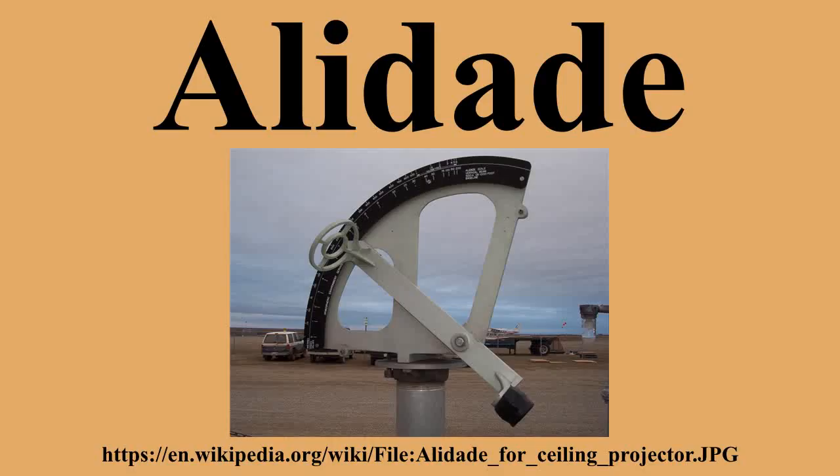In modern alidade types, the alidade is the part of a theodolite that rotates around the vertical axis and bears the horizontal axis around which the telescope turns up or down. In a sextant, the alidade is the turnable arm carrying a mirror and an index to a graduated circle in a vertical plane — today it is more commonly called an index arm. Alidade tables have also long been used in fire towers for sighting the bearing to a forest fire.